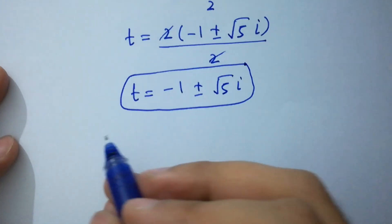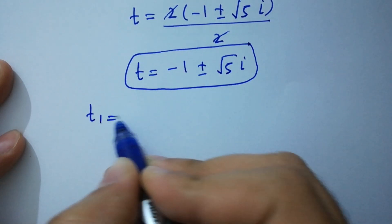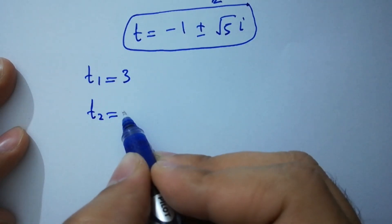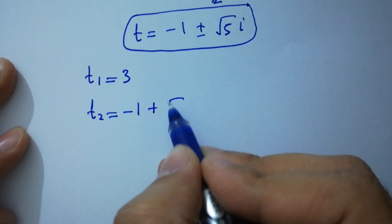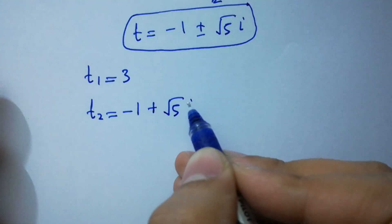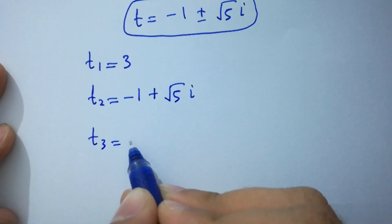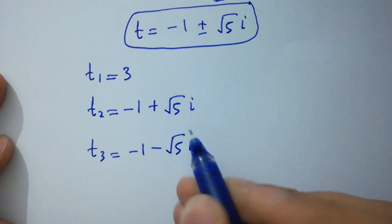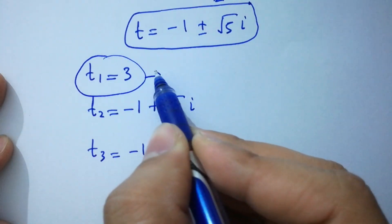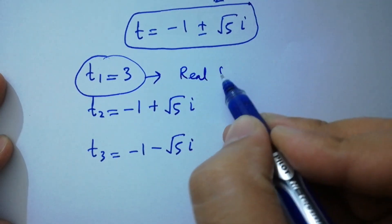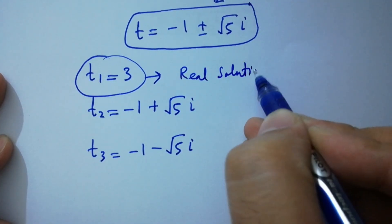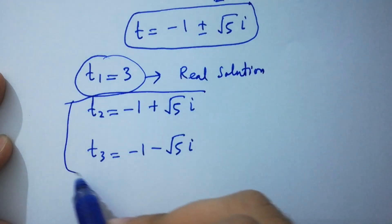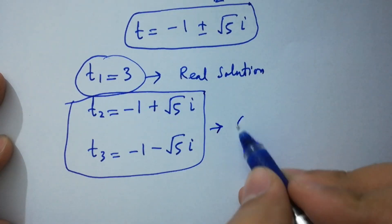So we have t₁ equal to 3, t₂ equal to minus 1 plus square root of 5 times i, and t₃ equal to minus 1 minus square root of 5 times i. Here t₁ equal to 3 is the real solution, and t₂ and t₃ are complex solutions.